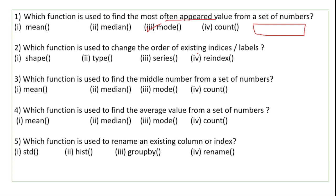Which function is used to change the order of existing indices or labels? You will use this function to change the index values or column labels and rearrange their order. Here you will use the reindex function. It changes the row index as well as column labels.